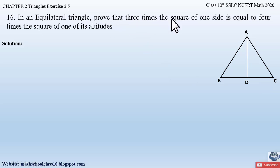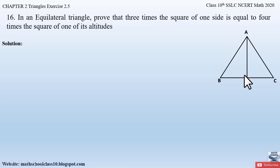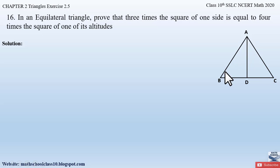Now, what we have to prove: three times the square of one side. We have to consider any one side in this triangle. Since we have drawn altitude AD to side BC, we cannot consider side BC, so we have to consider either side AB or AC. We take three times the square of one side equal to four times the square of one of its altitudes.